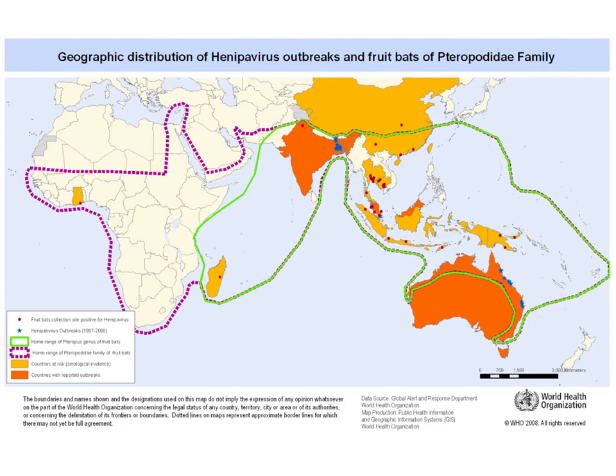Looking at a WHO map, the green line shows the range of the fruit bat genus Pteropus. This includes northern Australia, where all the Hendra cases — shown as blue dots — have occurred. Red dots show Nipah outbreaks. The virus is present in fruit bats across a wide range including India, Bangladesh, and Madagascar. Red dots in Africa indicate virus-positive bats with no human cases yet, but the potential exists. Knowing the bat's geographic range is critical for making appropriate precautions.